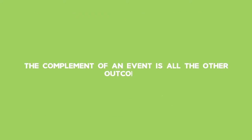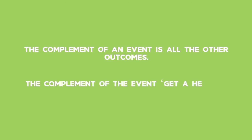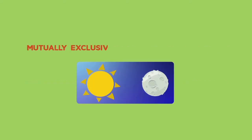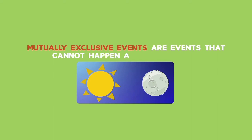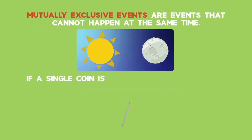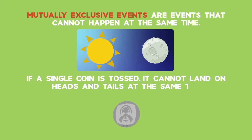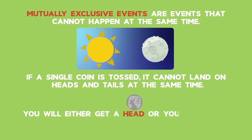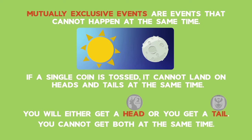The complement of an event is all the other outcomes. The complement of the event 'get a head' is the event 'get a tail'. The events of getting a head or getting a tail are mutually exclusive. Mutually exclusive events are events that cannot happen at the same time. If a single coin is tossed, it cannot land on heads and tails at the same time — you will either get a head or a tail, not both. We say that tossing a coin is a mutually exclusive event.